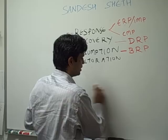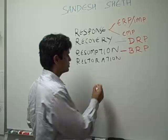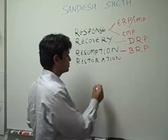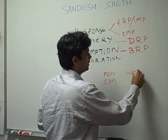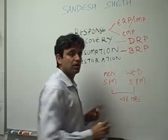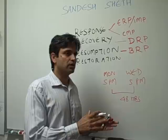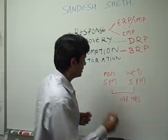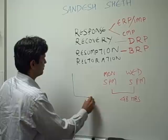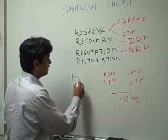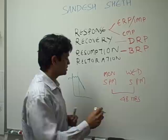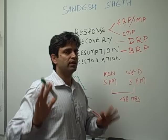The second aspect of business resumption: assuming the organization took 48 hours to recover — disaster on Monday at 5 p.m., recovery by Wednesday at 5 p.m. During these 48 hours, the organization would have used its workarounds or alternate working procedures for carrying out transactions. If you recall the graph of efficiency versus time, the drop was not vertical but slanted, because alternate workaround procedures still help continue the business, though at a much lesser effectiveness and efficiency.